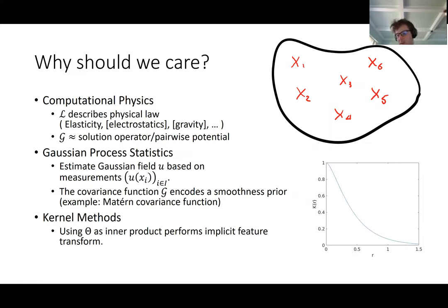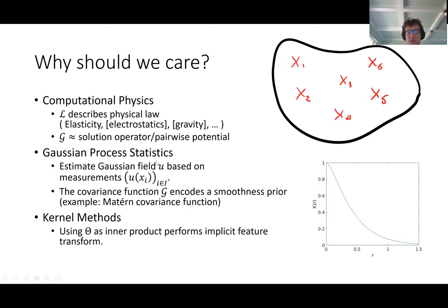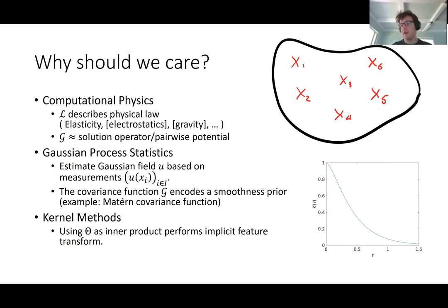The first question is: why should we care about this? These types of systems are quite ubiquitous in applied mathematics. In computational physics and engineering, we have systems described by elliptic partial differential equations — like pressure terms in Navier-Stokes, electrostatics, and many other examples. There's also an important application in Gaussian process statistics, where these matrices theta are the natural choice of covariance matrices for smooth Gaussian processes. In kernel methods, theta represents inner products between feature vectors, encoding relationships between nearby data points. Roughly, theta shows strong correlation for nearby points that weakens as points move apart.